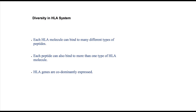HLA class 1 and class 2 genes are co-dominantly expressed. That means genes present on both chromosomes are expressed, resulting in six different types of HLA class 1 molecules — three molecules derived from each chromosome. This also contributes to the diversity of the HLA system.